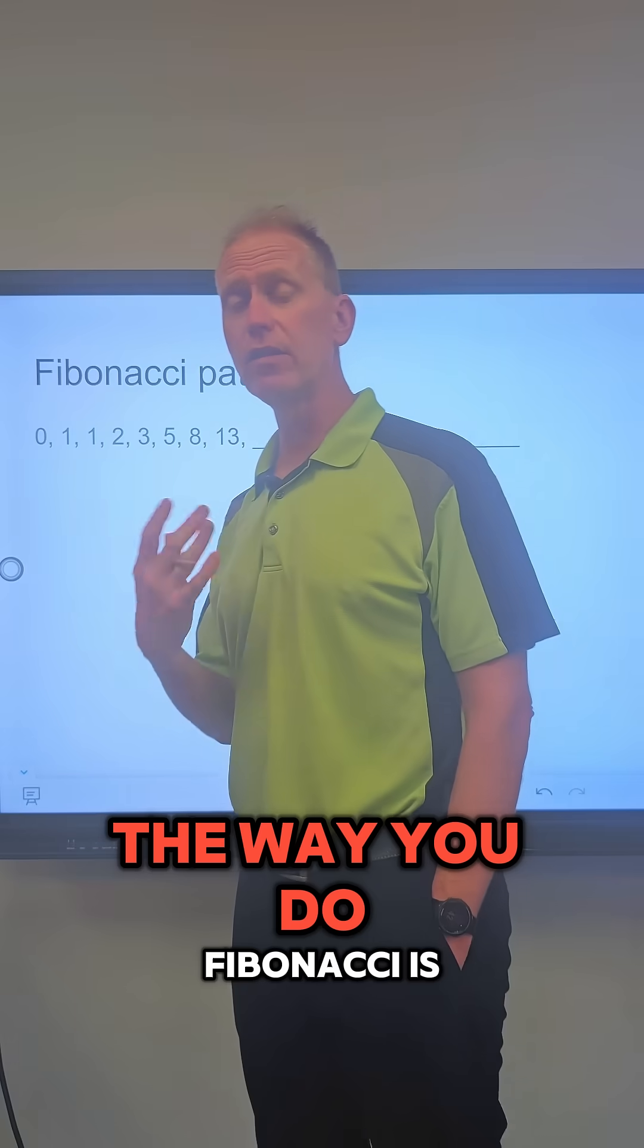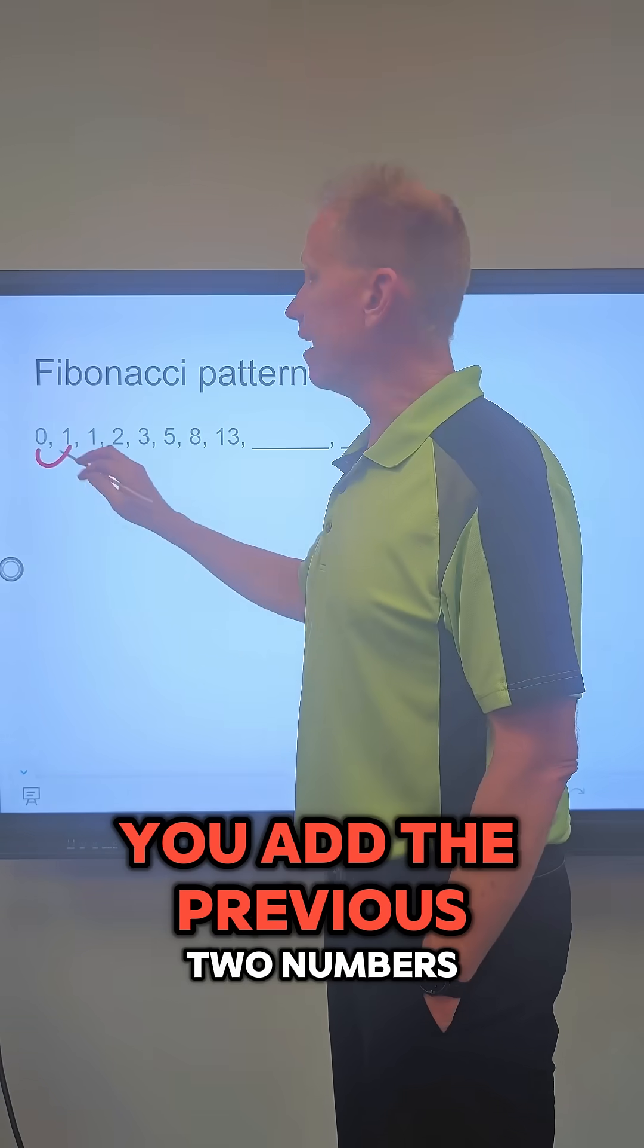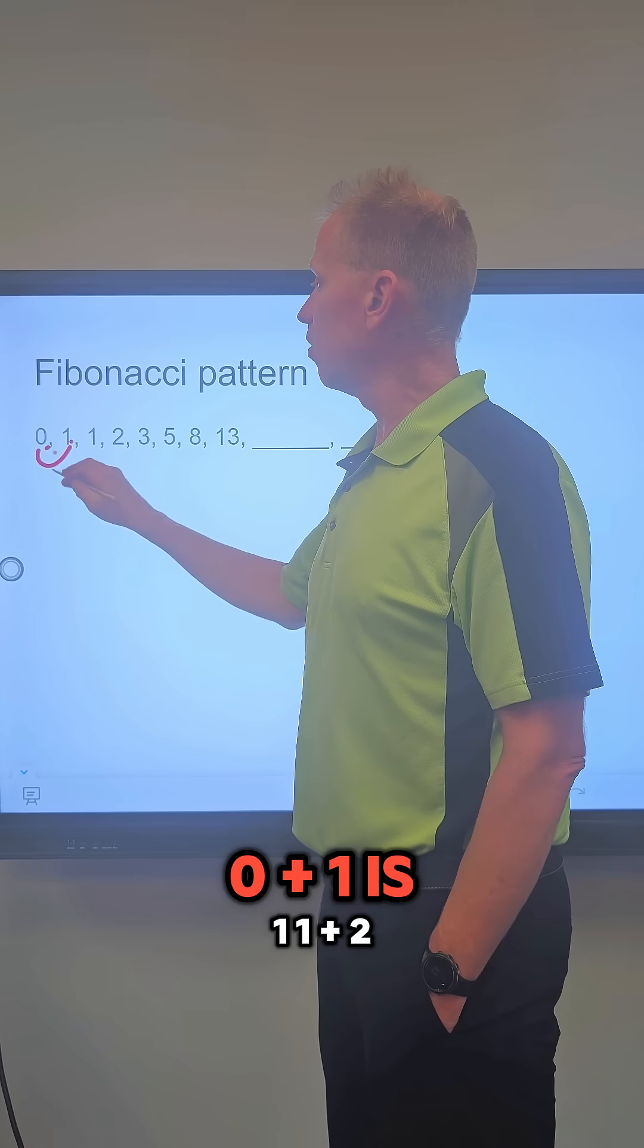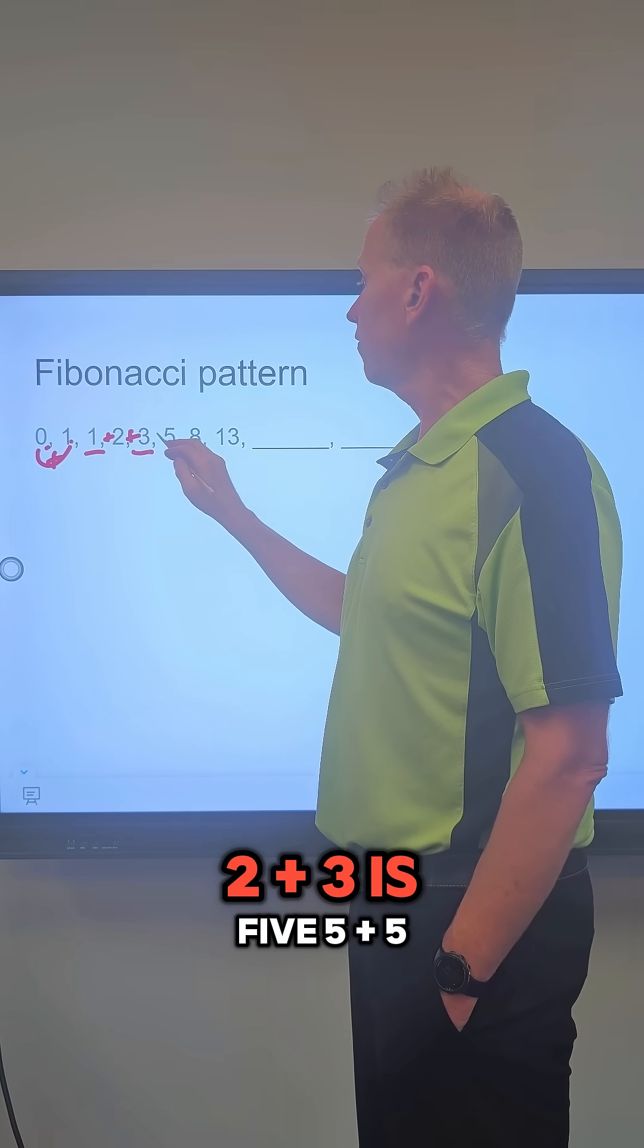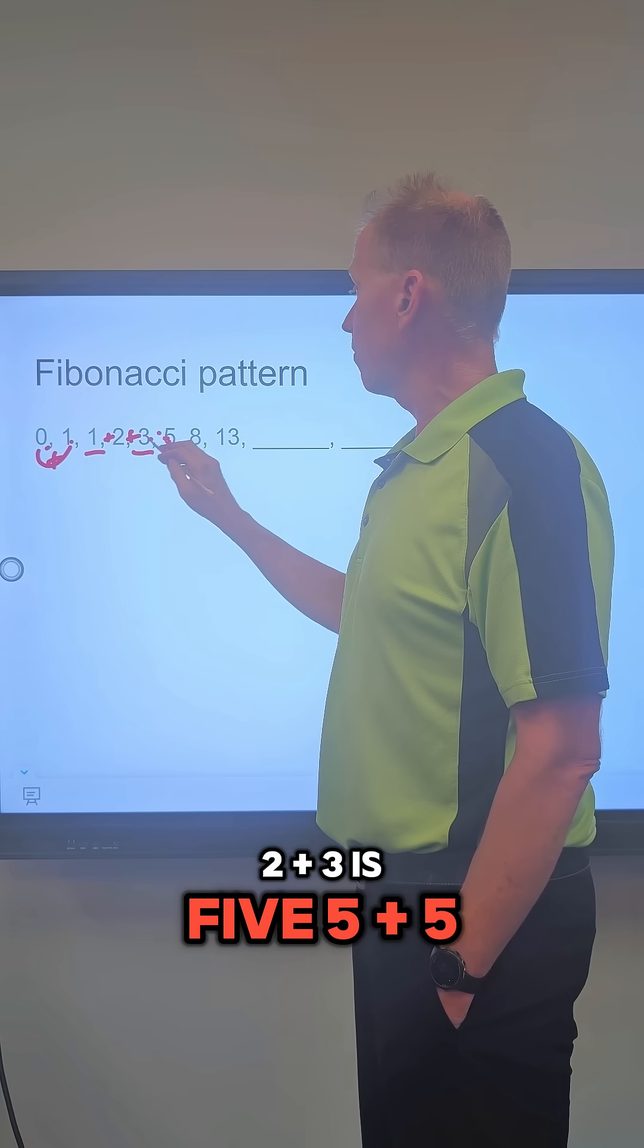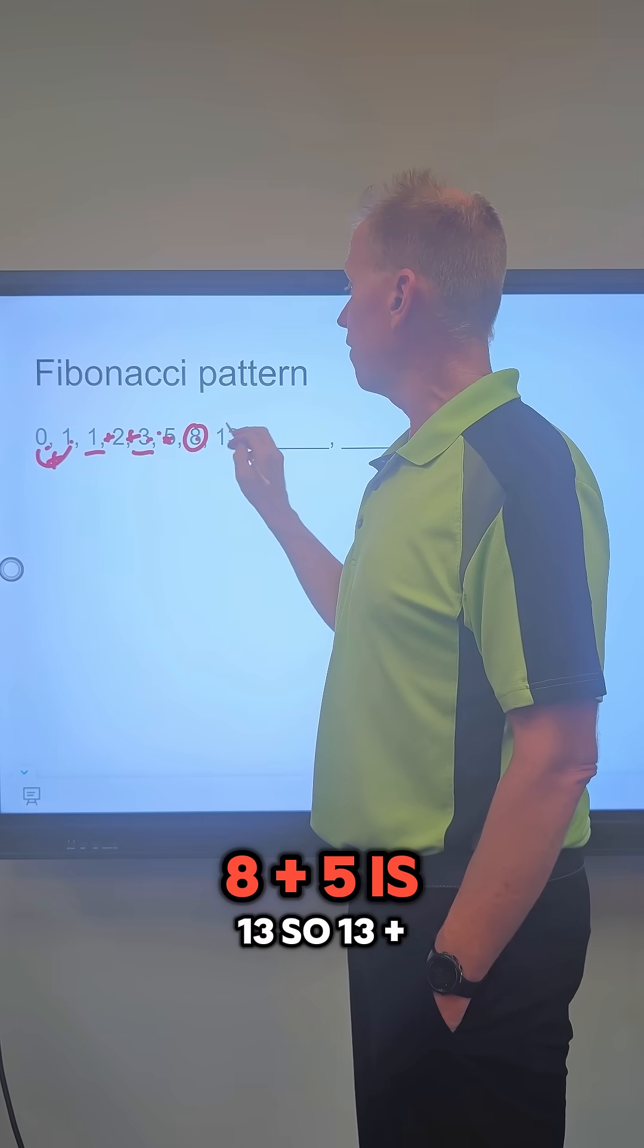It turns out the way you do Fibonacci is you add the previous two numbers. 0 plus 1 is 1, 1 plus 2 is 3, 2 plus 3 is 5, 5 plus 3 is 8, 8 plus 5 is 13.